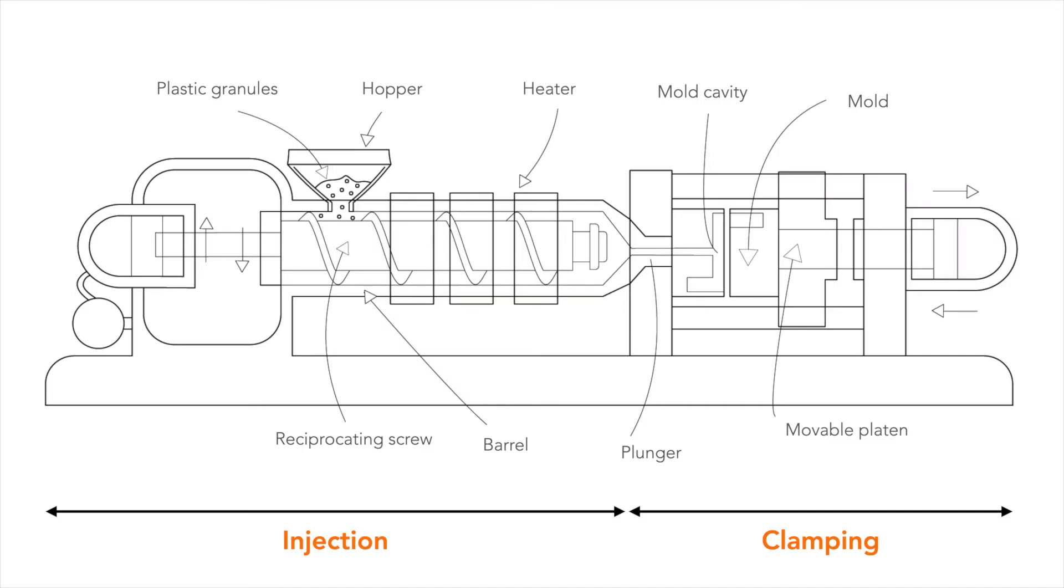Each machine consists of three general parts: a material hopper, a heating unit, and an injection ram or screw-type plunger. How does the machine work?